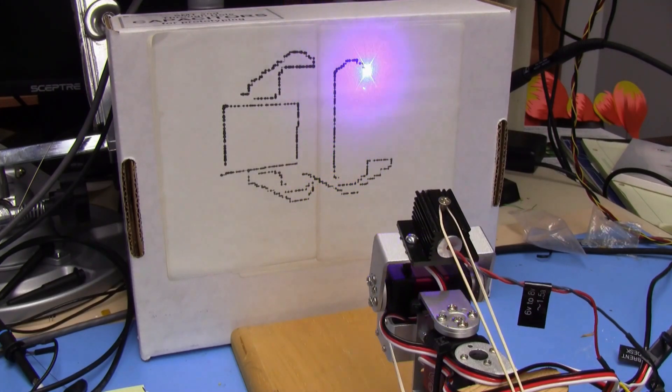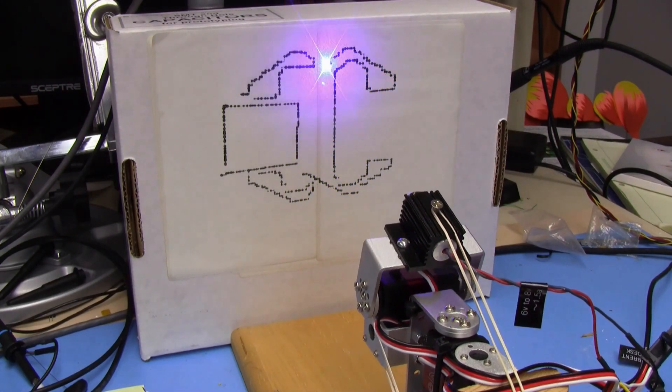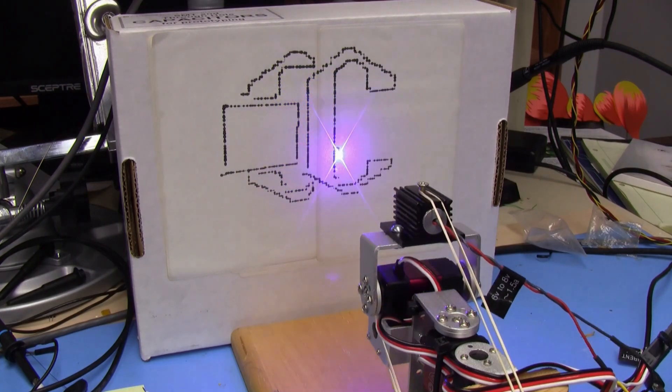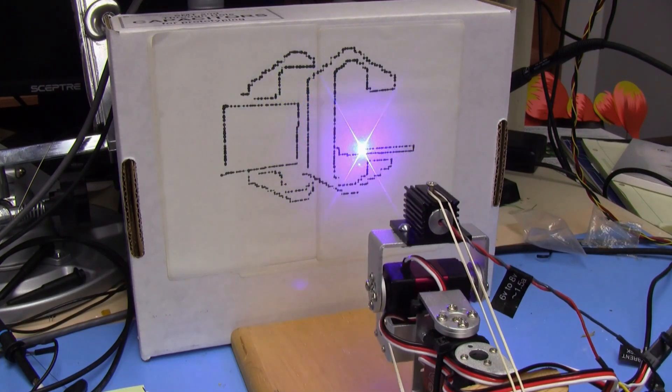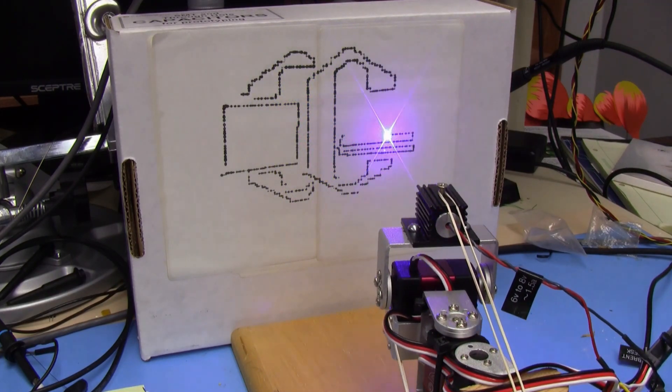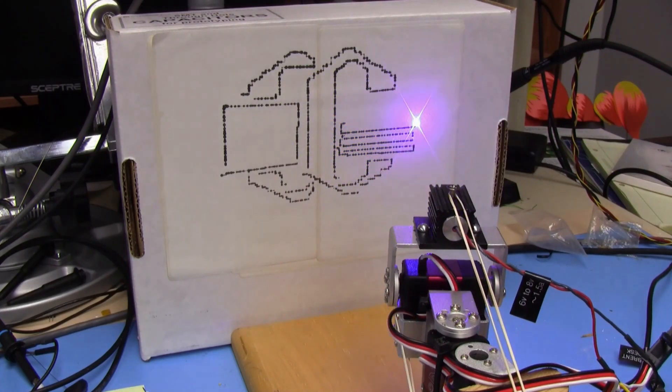What this does is it moves the servo, gives time for the pulse of the servo to end, and then turns the laser on for a few milliseconds, then turns the laser off, then moves the servo again. That's why it looks like some dots.